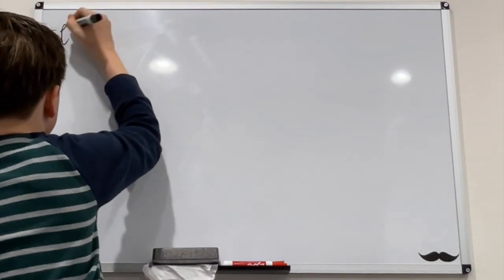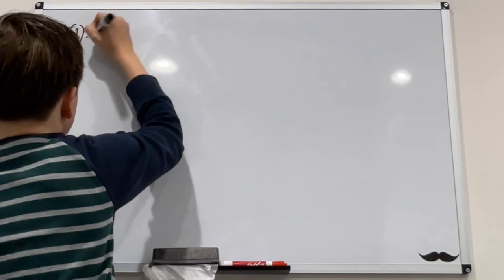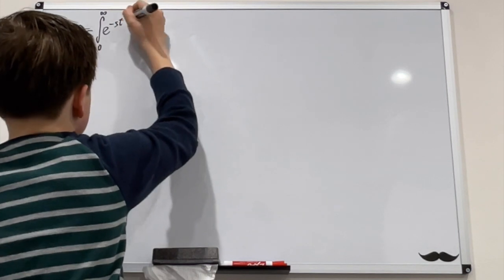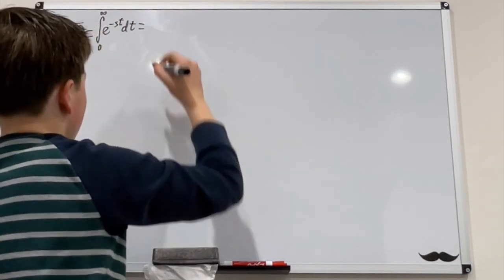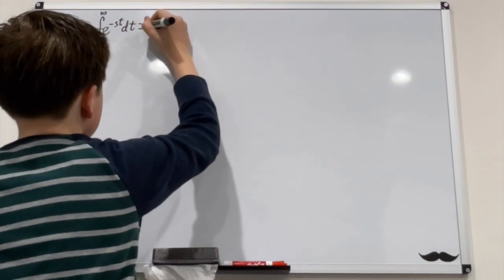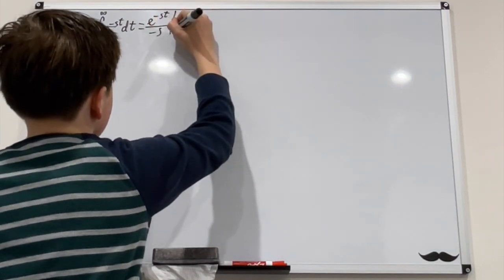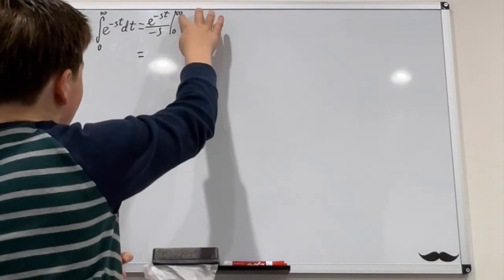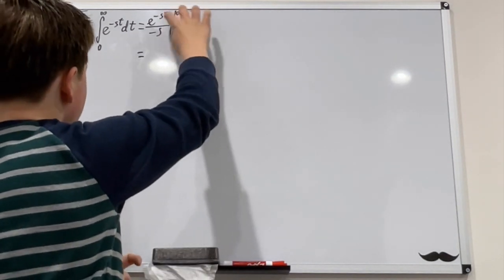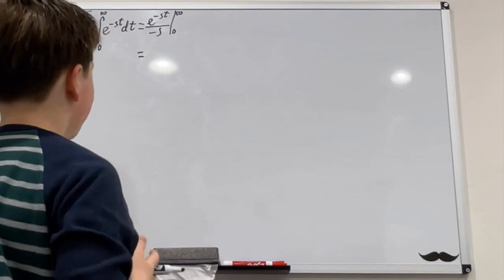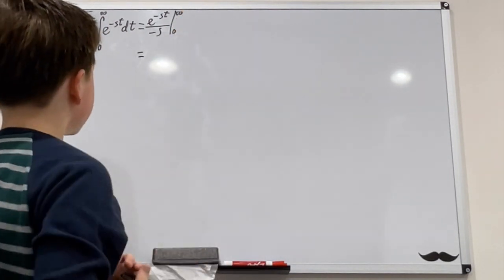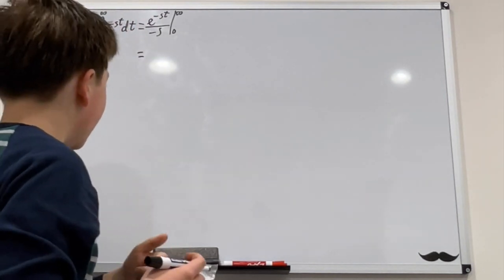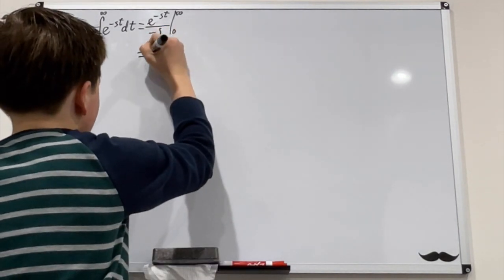Finally we'll have to take the Laplace transform of one. This will just be the integral from zero to infinity of e to the negative st dt — no integration by parts needed here. It's just e to the negative st over negative s, evaluated from zero to infinity. As t approaches infinity, e to the negative st approaches zero, and as t is zero this is just one. So it's negative one over s, and zero minus negative one over s is just one over s.